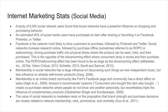This is sometimes referred to as ROPO — Research Online Purchase Offline — or Web Roomie: driving purchase traffic into physical stores where the product can be seen, tried, and then purchased. This is really the opposite of the showroom effect, where customers go to the store and then purchase it online. The ROPO or Web Roomie effect has been found to be just as important as the showroom effect. Membership in social networks has a large influence on discovering new independent music, but less influence on already well-known products. Membership in an online brand community — like Ford's Facebook page — has a direct effect on sales. Amazon's recommendation system, 'customers who bought this also bought,' is used to create co-purchase networking where people buy more simply on a recommendation, and this has a significant influence on purchasing behavior.